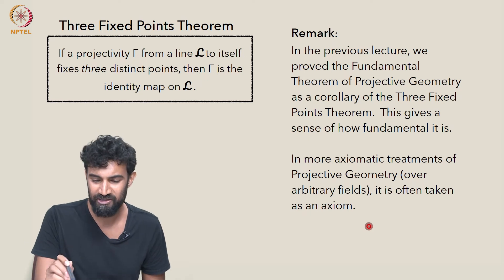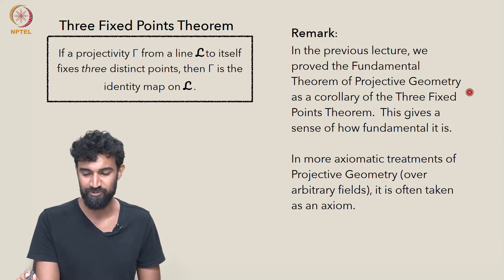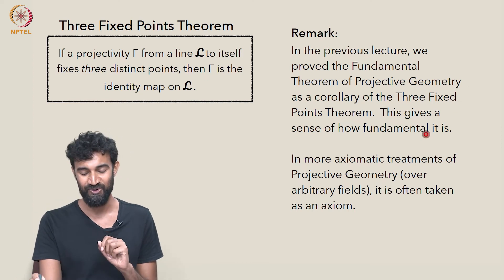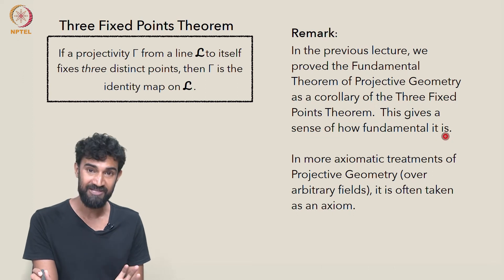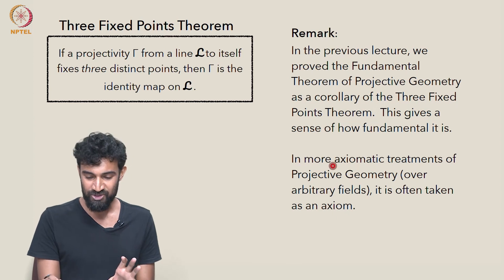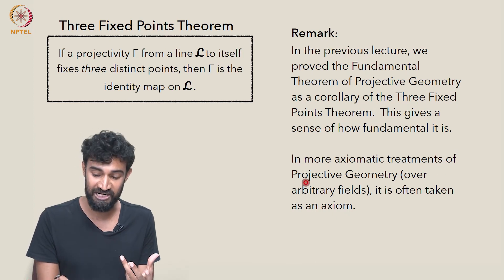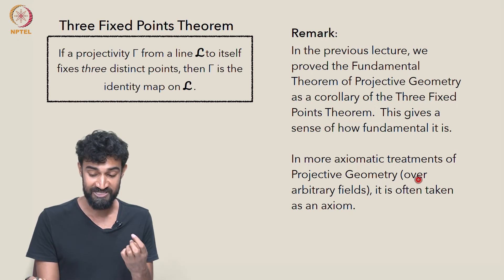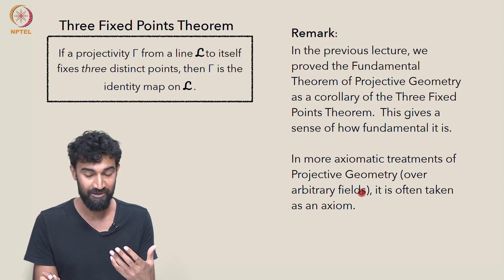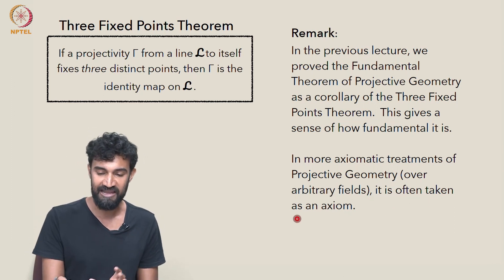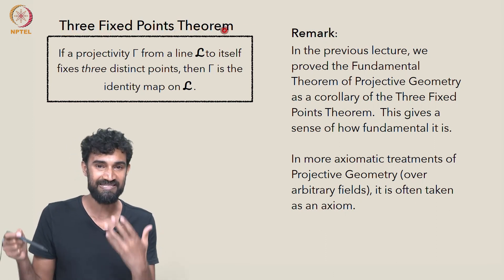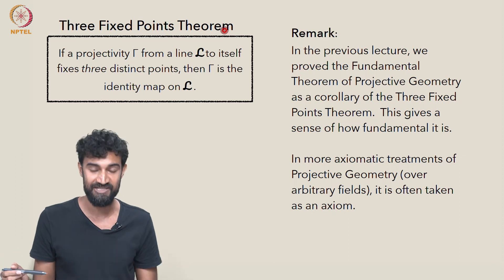And one final remark. In the previous lecture, we proved the fundamental theorem of projective geometry as a corollary of the three fixed points theorem. So this gives you a sense of how fundamental the three fixed points theorem really is. And it's also why in many more axiomatic treatments of projective geometry, like where, for example, you can define everything, develop everything over an arbitrary field, not necessarily real numbers, it's often just taken as an axiom. So rather than it's not something you prove in a more general treatment, it's actually taken as an axiom, or some equivalent statement is taken as an axiom.